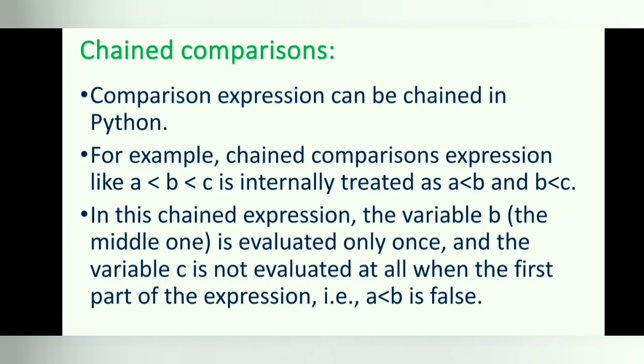Chain comparisons. Comparison expressions can be chained in Python. For example, a is less than b is less than c is internally treated as a is less than b AND b is less than c. In this chained expression, the variable b is evaluated only once, and c is not evaluated at all when the first part — a is less than b — is false. According to the AND truth table, if the first operand is false, the result is already false, so the second part is not checked.